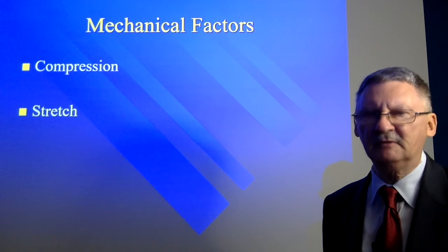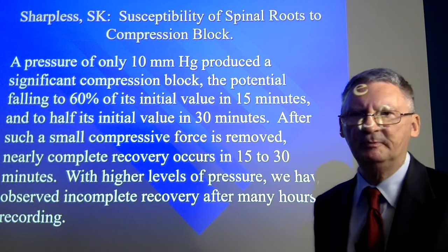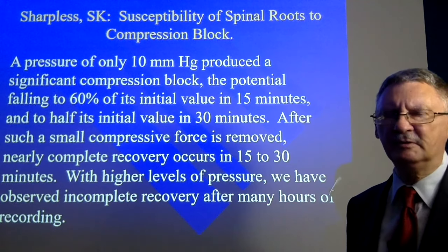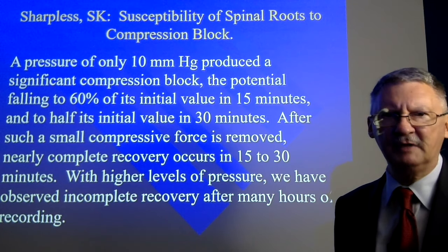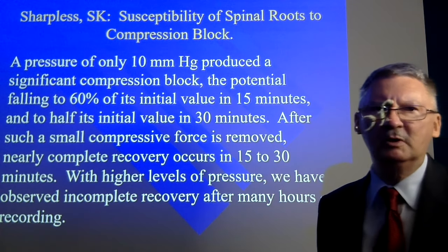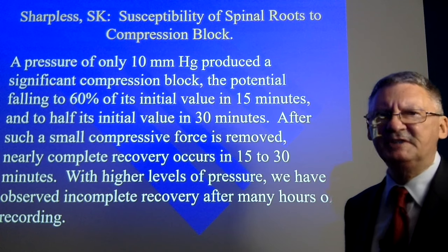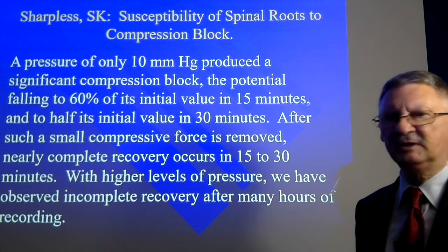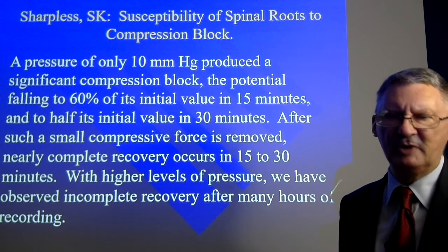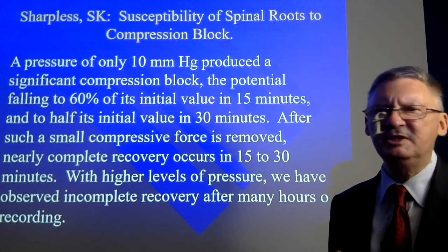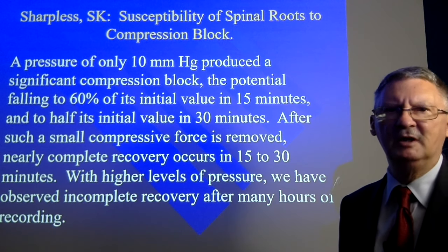The two main mechanical factors associated with neural dysfunction include compression and stretch. Earlier studies had suggested that peripheral nerves required a tremendous amount of compressive force to significantly alter their function. But in the early 70s, the work of Sharpless at the University of Colorado revealed that a pressure of only 10 millimeters of mercury produced a significant compression block. This has been likened to the weight of a dime or the threshold of perception of your finger on the back of your hand — it doesn't take very much compressive force at all to significantly alter the function of a nerve root.